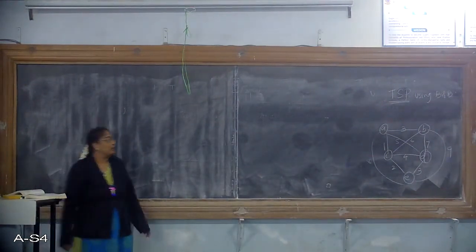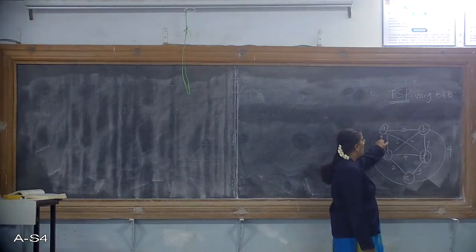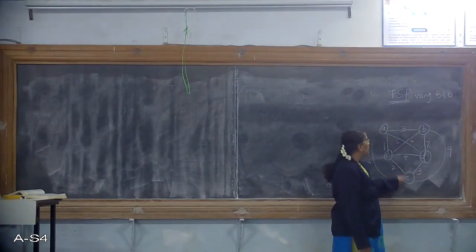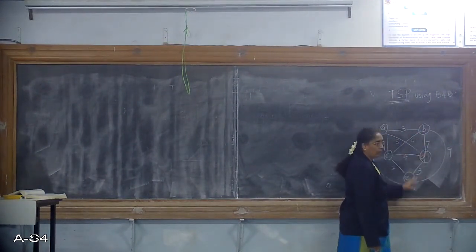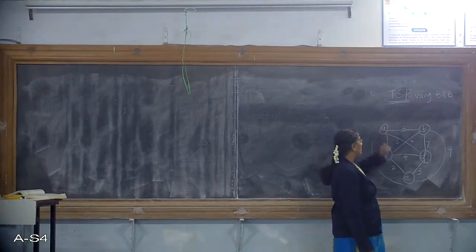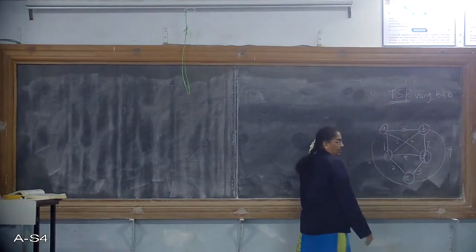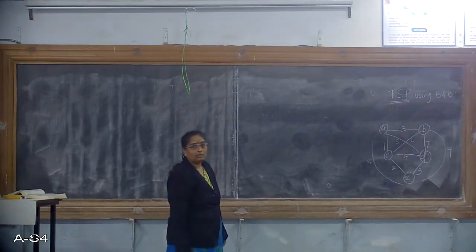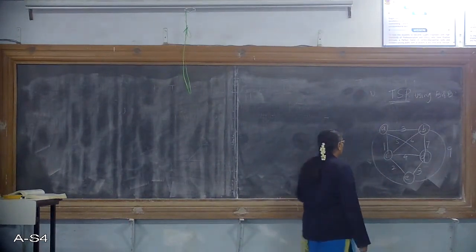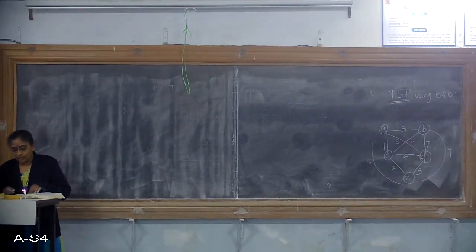The Travelling Salesperson Problem states that you need to start from a particular node. These nodes represent the cities of a tour. The travelling salesperson has to start with one city — for example A — visit all cities only once, and come back to the original city where they started.